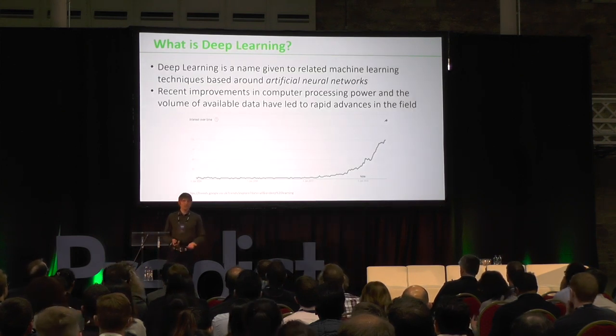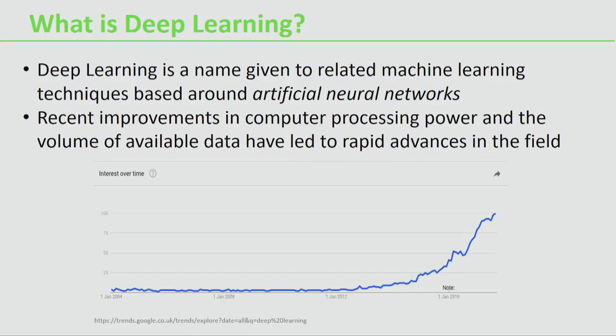First, a brief introduction to what we mean by deep learning. Deep learning is a name given to related machine learning techniques based around artificial neural networks. Artificial neural networks are an architecture for a type of machine learning algorithm that's loosely based around how human and animal brains work. We don't have a deep understanding of how brains actually work, but there is a loose analogy to some of their small components.